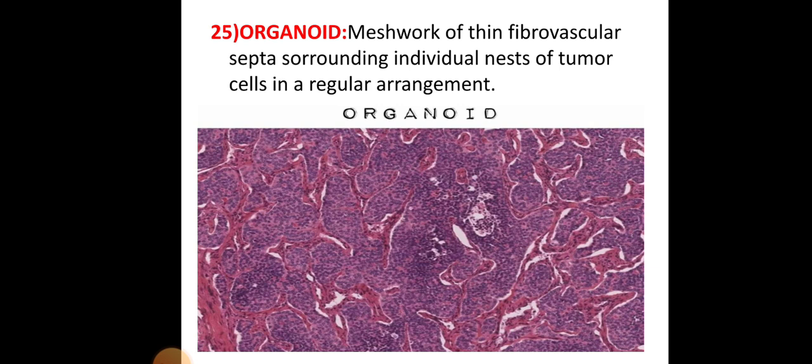The organoid pattern is where a meshwork of thin fibrovascular septa surrounds individual nests of tumour cells in a regular arrangement.